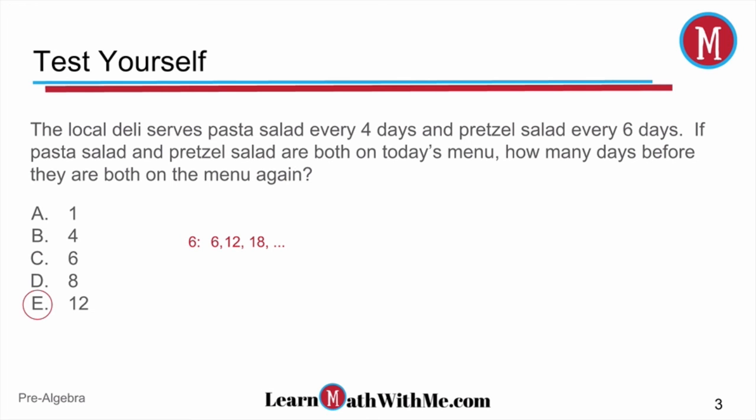For the pasta salad, it occurs every four days. So let's write a couple of multiples of four. That tells us which days we'll see the pasta salad. It will be on day four, day eight, day 12, and there we have a common multiple with the six. That 12 is the common multiple. So if the two items are served today, the next time we see them will be day 12.